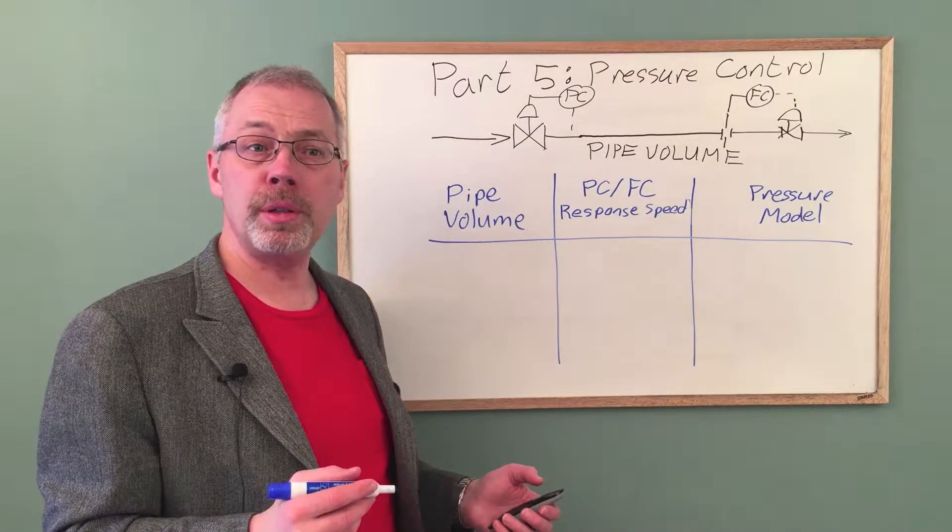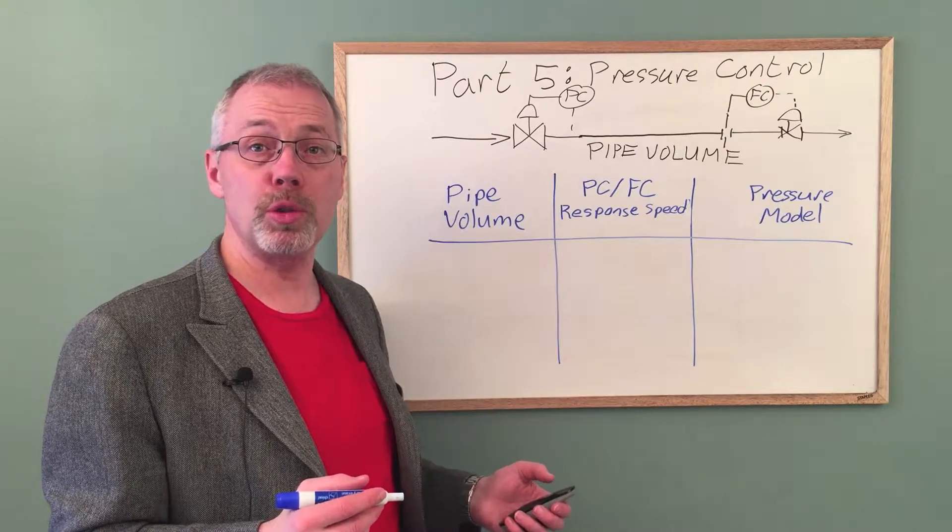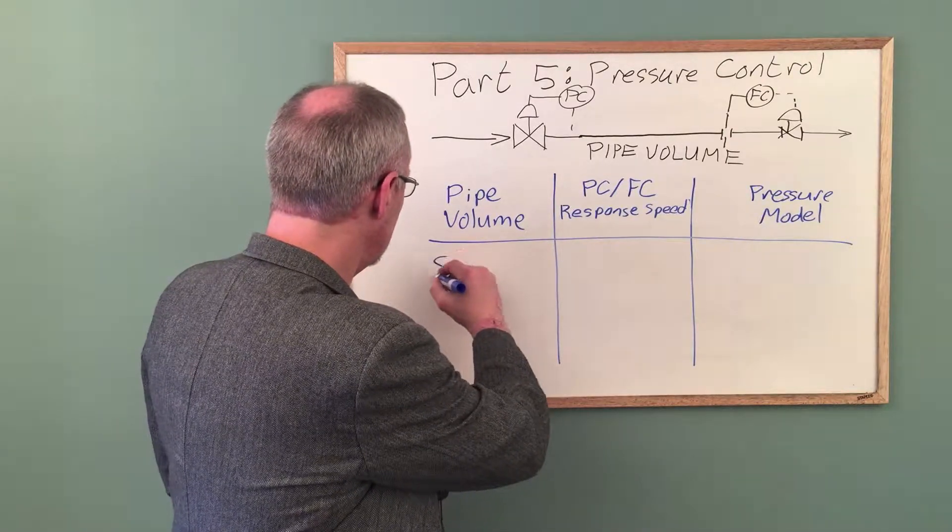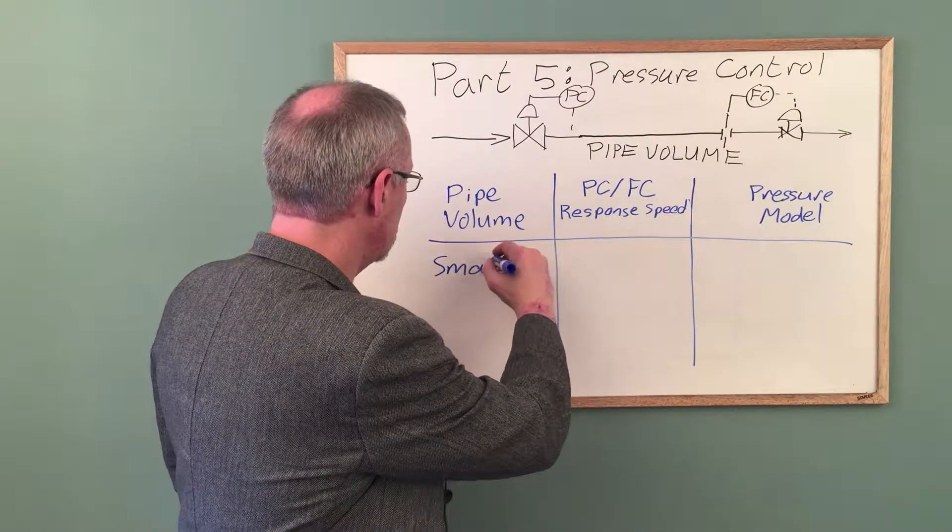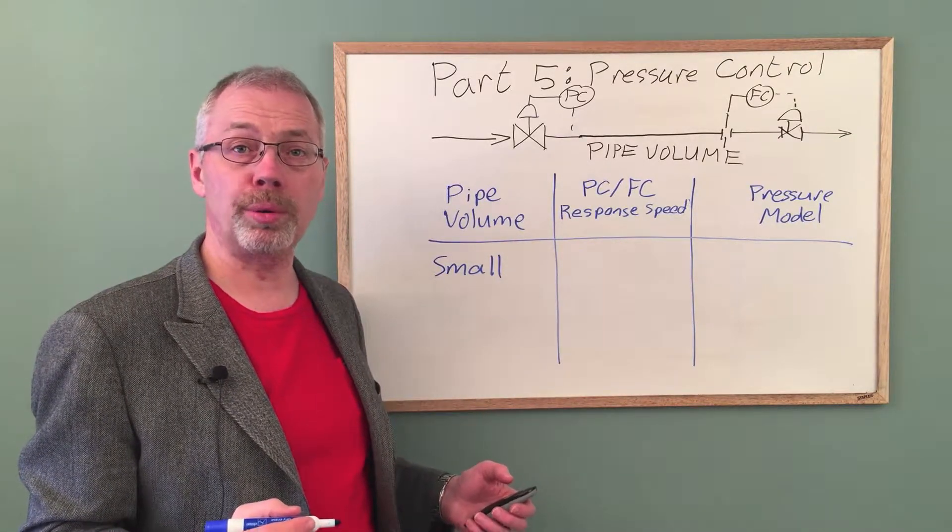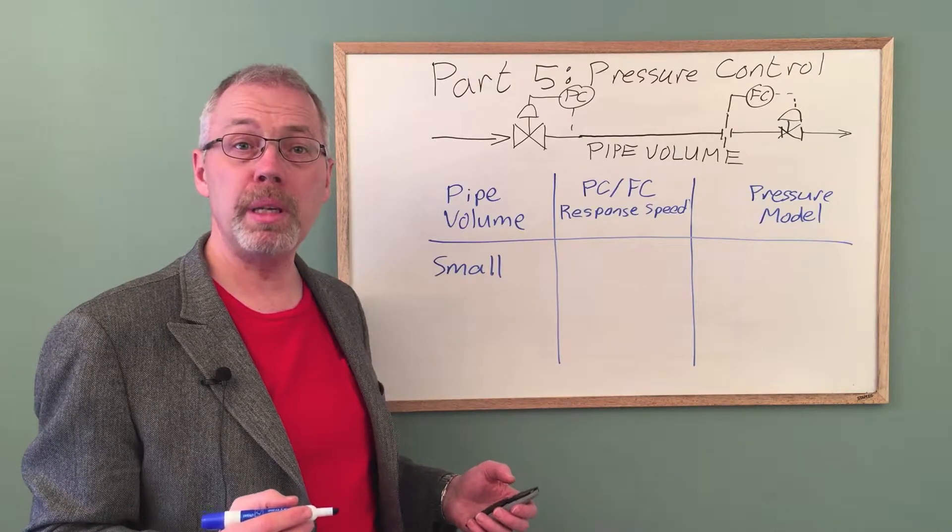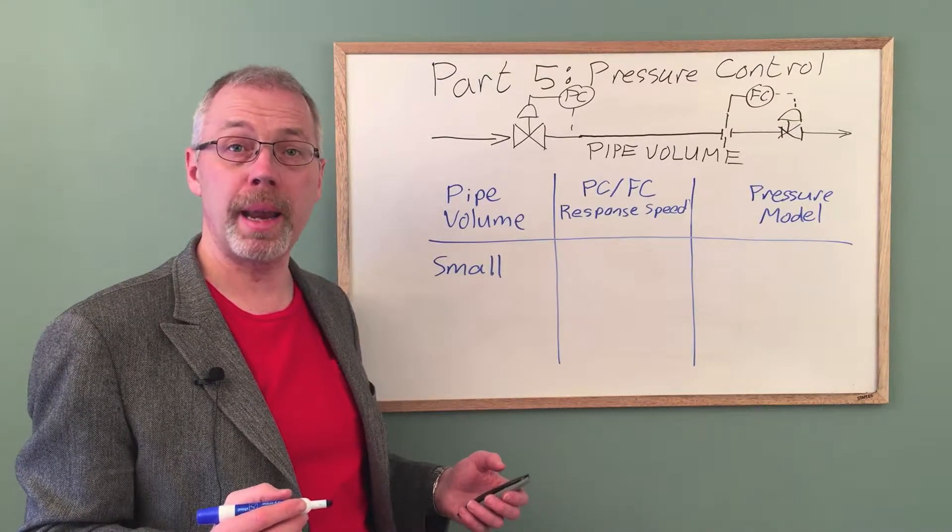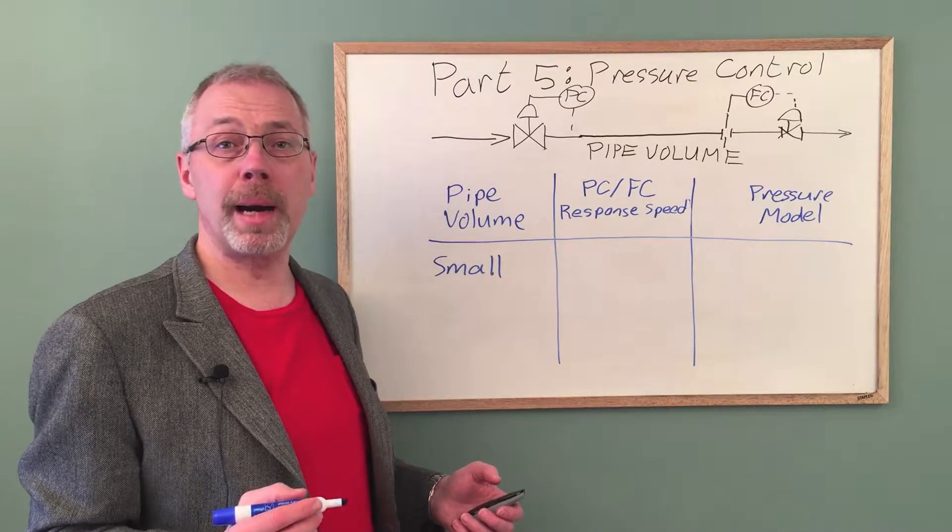First, let's consider the case where the pipe volume is quite small. In this case, a change in the pressure control or flow control output has an immediate impact on both the pressure and the flow rate. This is an interacting system.